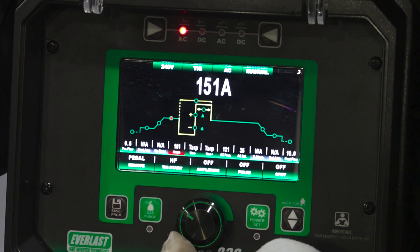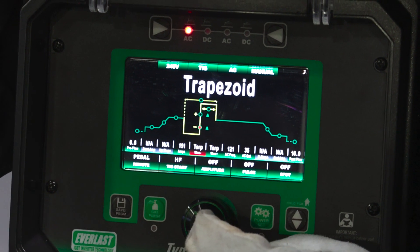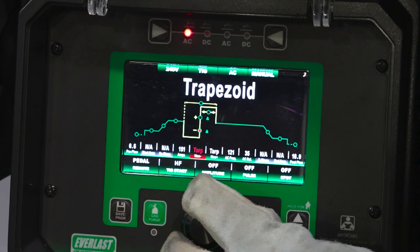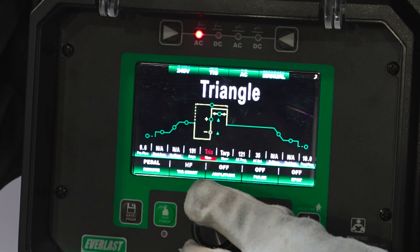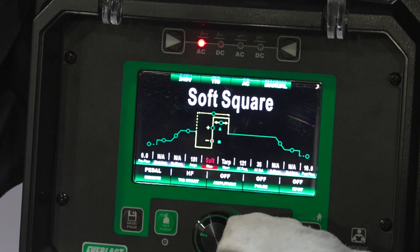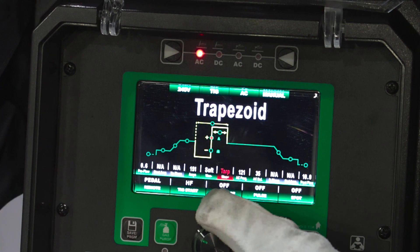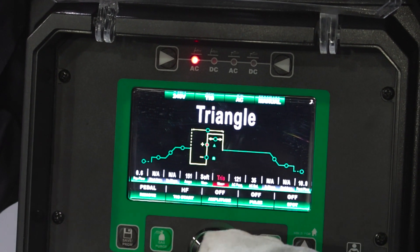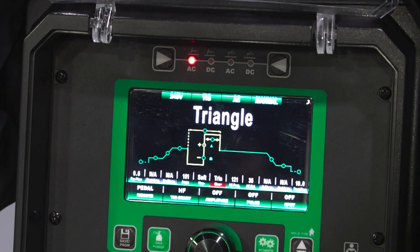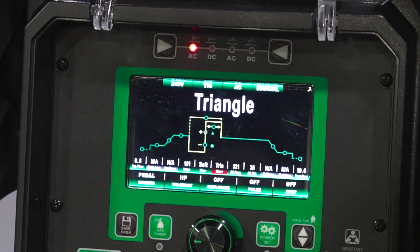So now we're here back at the machine, use our dial, go over and select our negative side of the waveform. We're going to go to soft square. Now our positive side of the waveform, push it into select, we're going to go triangle. So now let's go back to the bench, see what difference this makes.